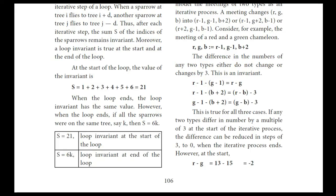Initially, one sparrow sits on each tree numbered 1 through 6, so the initial sum S = 1+2+3+4+5+6 = 21. If all sparrows were on the same tree k, then S = 6k. By the loop invariant, S remains 21 at the end. So 6k = 21, giving k = 21/6 = 7/2, which is not a whole number.